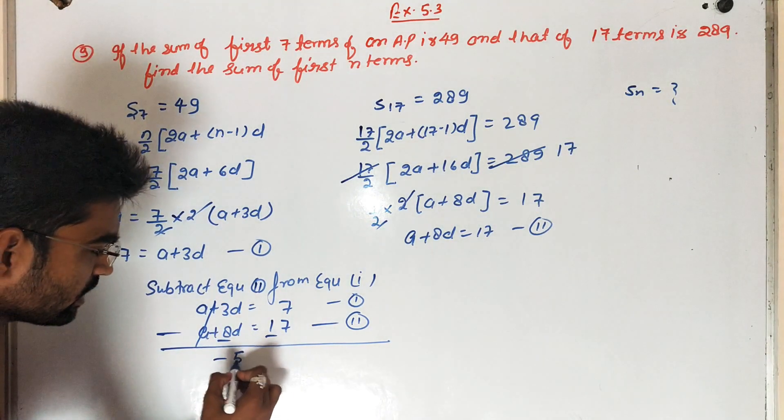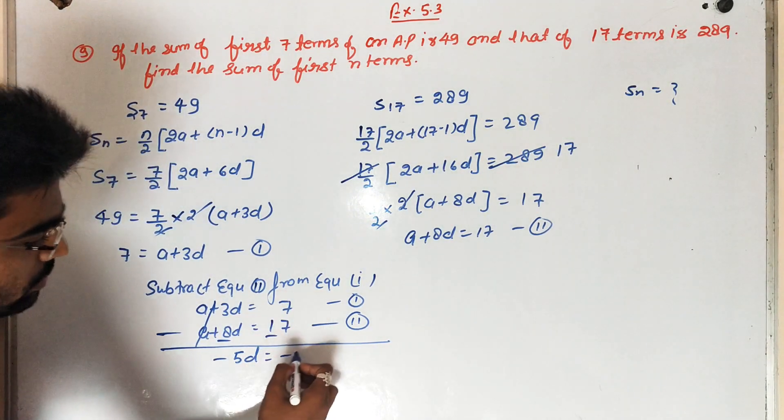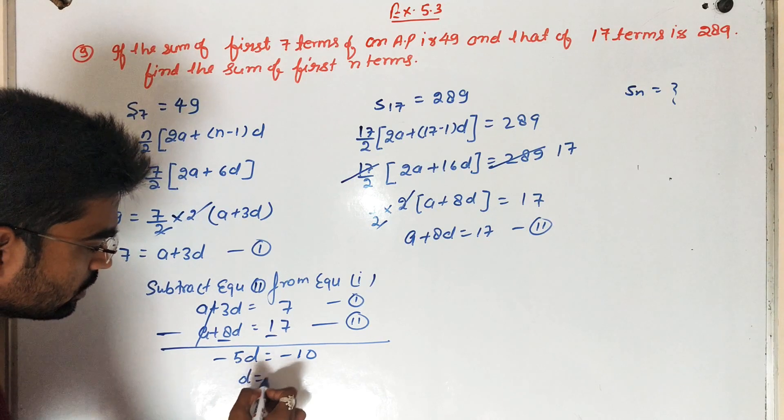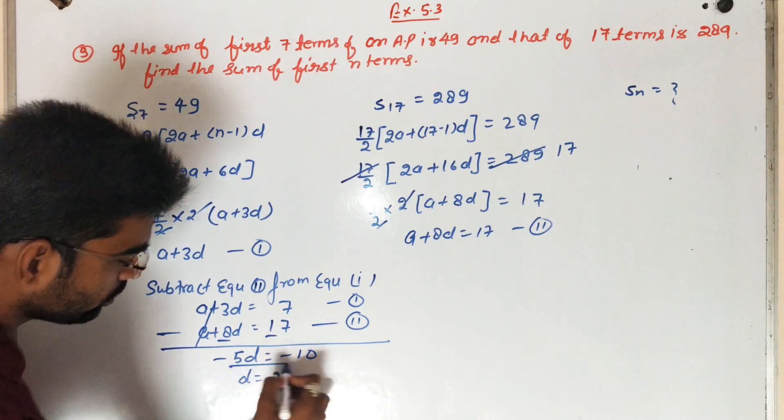A to A cancel out. Minus 5D is equal to minus 10 and D is equal to 10 upon 5. That is 2. Common difference.